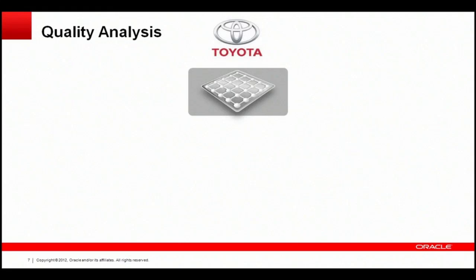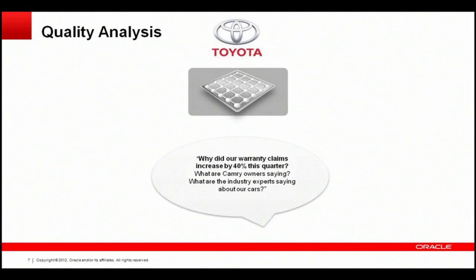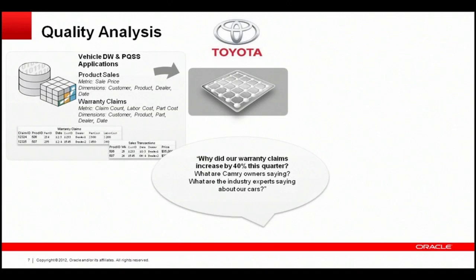There was no data and no report in the data warehouse that could answer that question. Even the most skilled data architect can't write a query to answer 'why are my vehicles suddenly accelerating?' Toyota needed a fundamentally new approach — one that allowed disparate structured and unstructured data sources to be quickly brought together so business users could get fast answers to new questions. We wanted to help quality engineers understand why warranty claims significantly increased during the quarter.